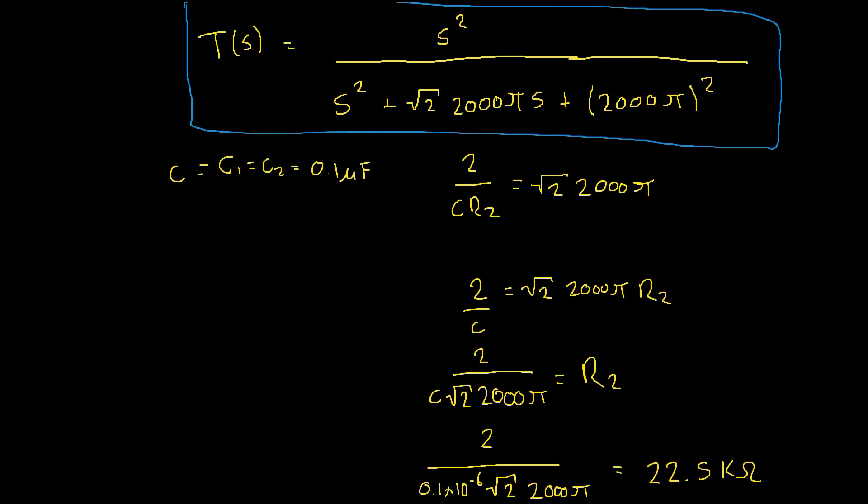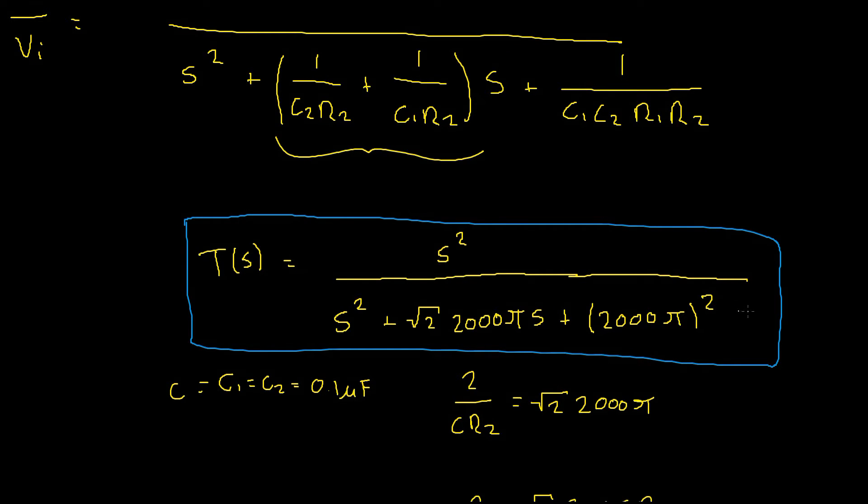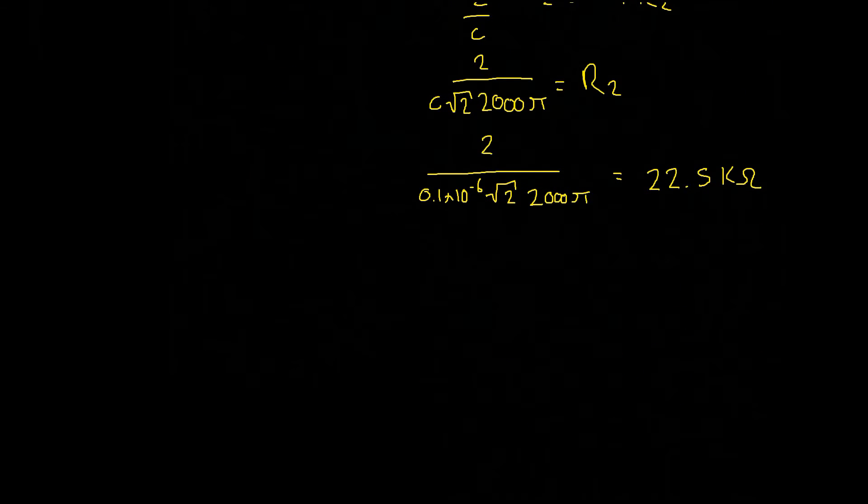Remember, our equation for R1 can be given by 1 divided by C1, C2 which will now be C squared multiplied by R2, the 22.5 kilo ohm resistor we just found. So, let's do that now,